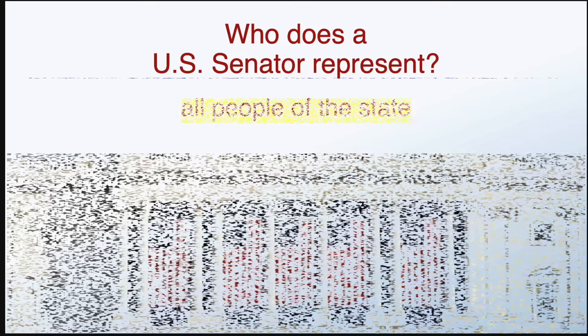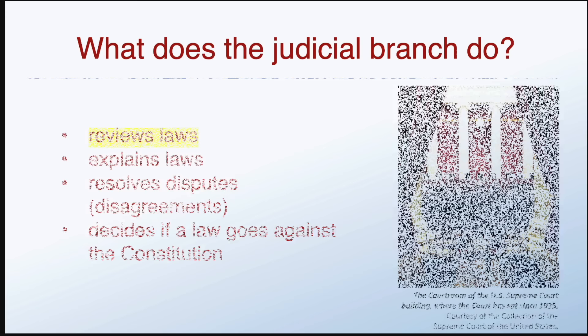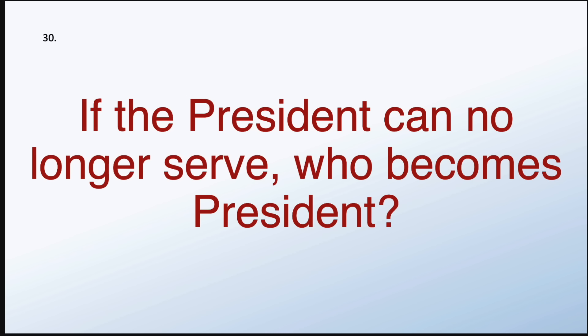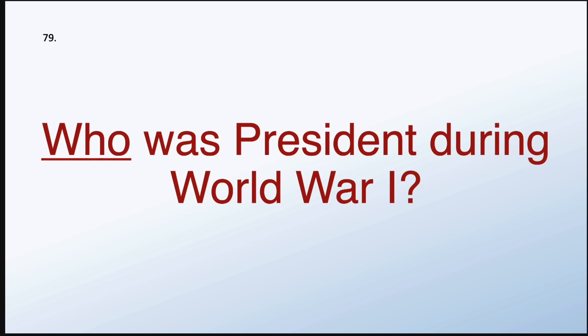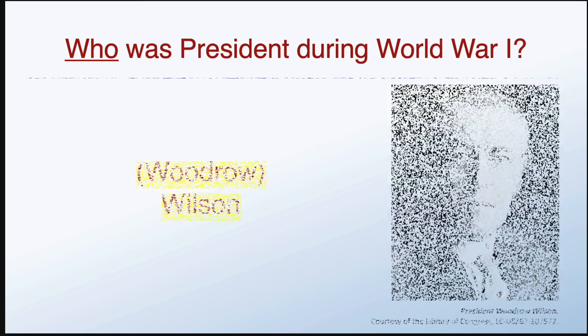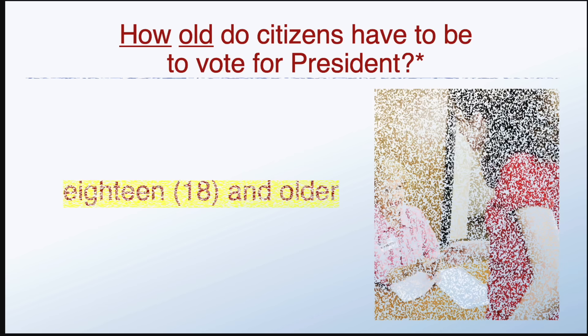What group of people was taken to America and sold as slaves? Africans. What does the judicial branch do? Reviews laws. If the president can no longer serve, who becomes president? The vice president. Who was president during World War I? Woodrow Wilson. How old do citizens have to be to vote for president? Eighteen and older.